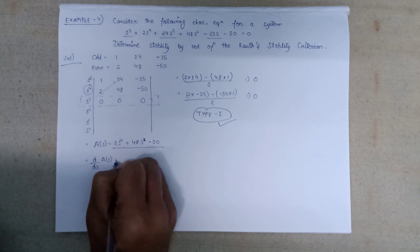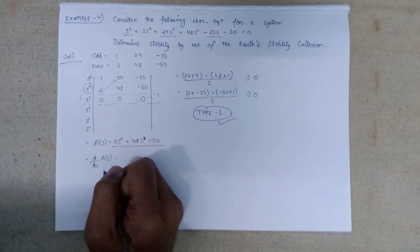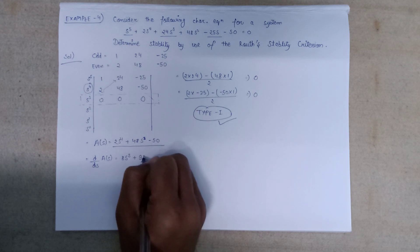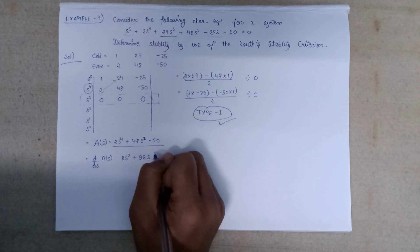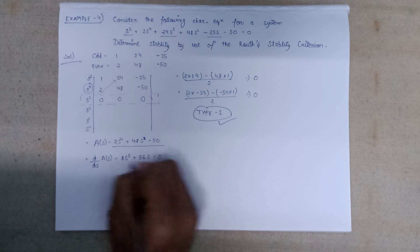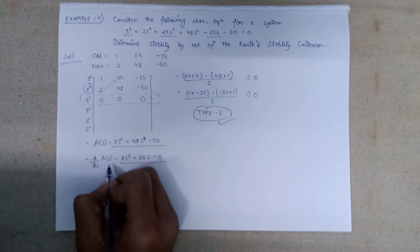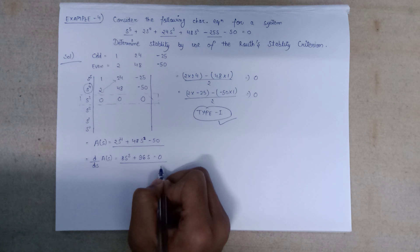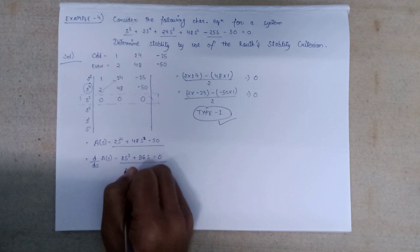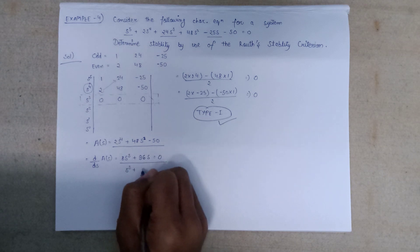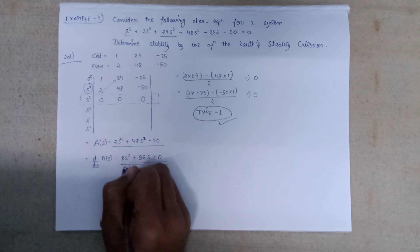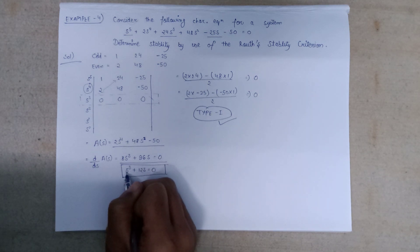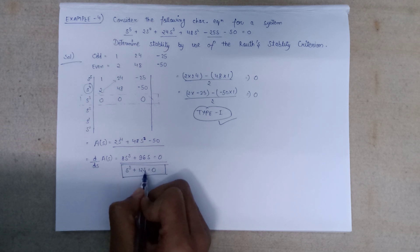After forming the auxiliary equation, we differentiate it. We find d/ds of A(s): the derivative of 2s⁴ plus 48s² minus 50 gives 8s³ plus 96s, and the constant term differentiates to 0. So our new equation is 8s³ plus 96s equals 0. Taking 8 as common, this simplifies to s³ plus 12s equals 0.